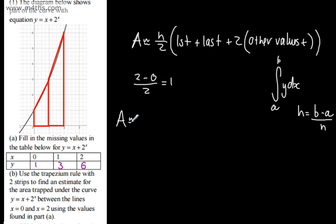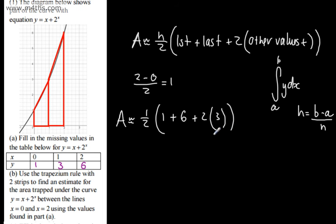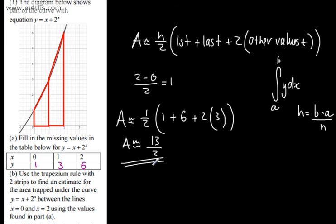Plugging in: the area is approximately equal to 1 over 2, multiplied by the first value 1, plus the last value 6, plus 2 lots of the middle value 3. That gives 6 plus 6 is 12, plus 1 is 13, so the area is approximately equal to 13 over 2 units squared.